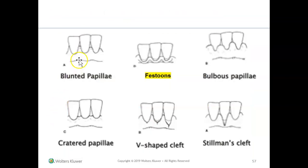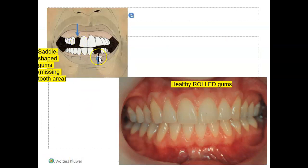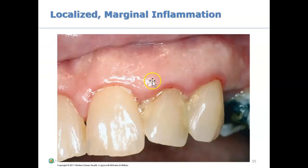So now that we've looked at all the papilla types — blunted, bulbous, cratered — sometimes we can have saddle shape where there are areas of missing teeth, sometimes we could have within normal limit which is healthy, and sometimes you could have rounded where it's losing its peak.